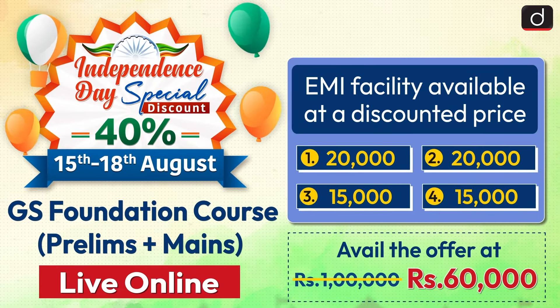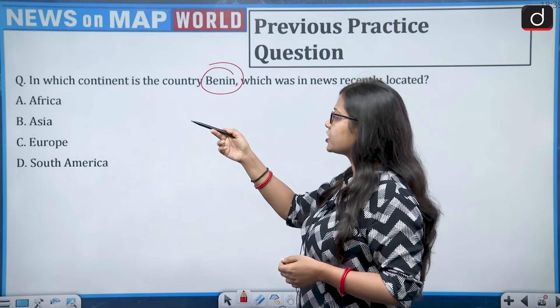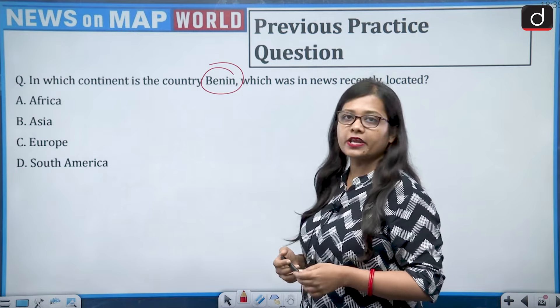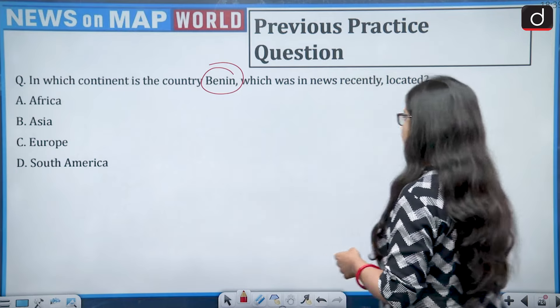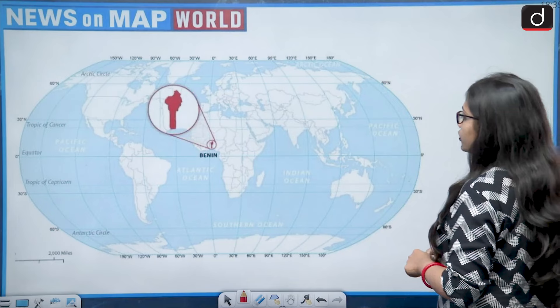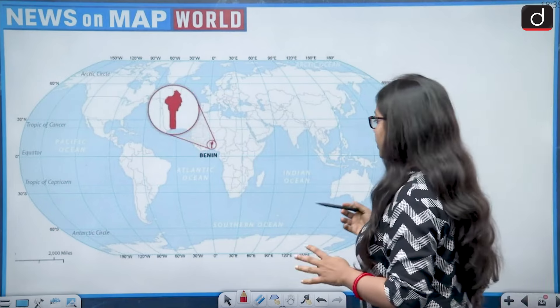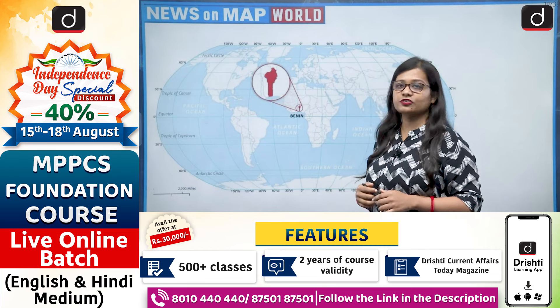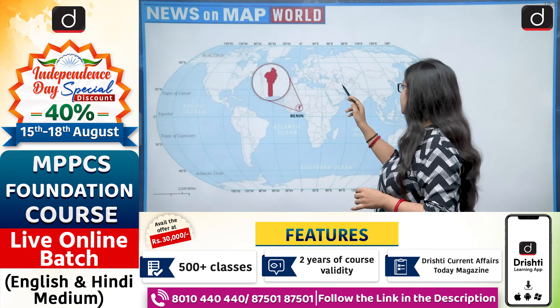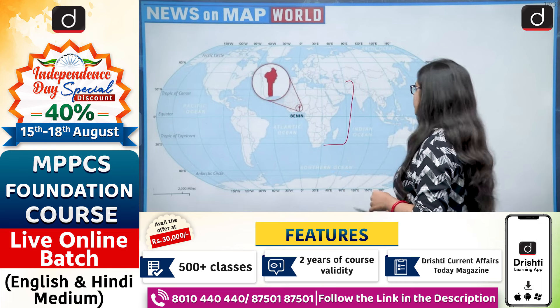The previous practice question is: in which continent is the country Benin, which was in the news recently, located? The options are Africa, Asia, Europe, or South America. If we look at the world map, Benin is a country which is located in Africa.